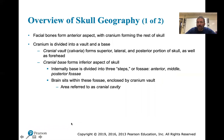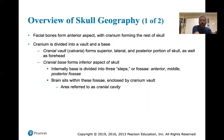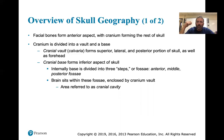The cranium is divided into a vault and a base. The cranial vault forms the superior, lateral, and posterior portions of the skull. The cranial base forms the inferior aspect, divided into three steps: anterior (frontal lobe), middle (hearing apparatus), and posterior (occipital lobe). The brain sits within the fossa enclosed by the cranial vault in the cranial cavity.